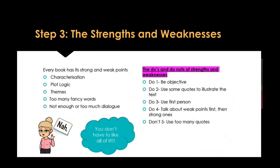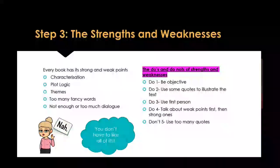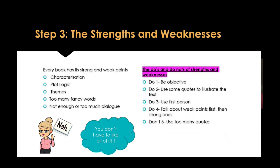In terms of simple do's and do nots for this section: do be objective and think about both strengths and limitations. It may also be good to include some quotes to illustrate your points, and of course keep writing in the first person — 'I thought', 'I feel'. You can talk about the weak points first and then the strong ones, depending on whether you're writing a positive or negative review. Although it's good to use some quotes from the book, please don't spend copious amounts of time rewriting parts of the book — only a couple of quotes are needed.